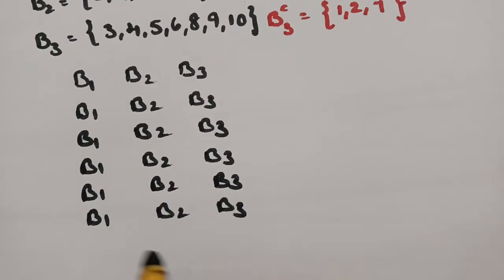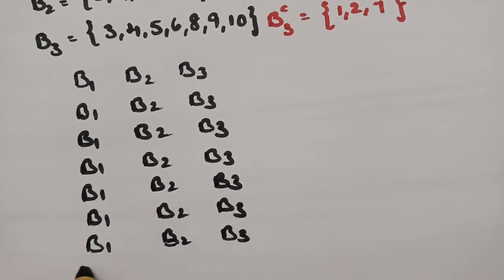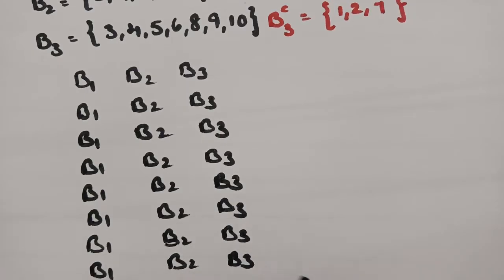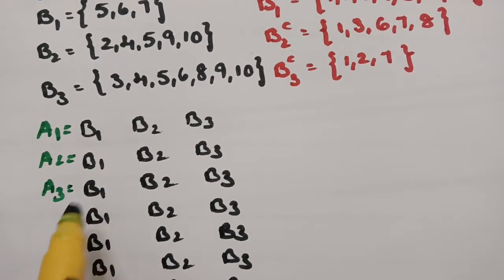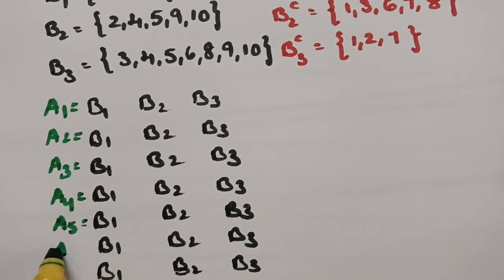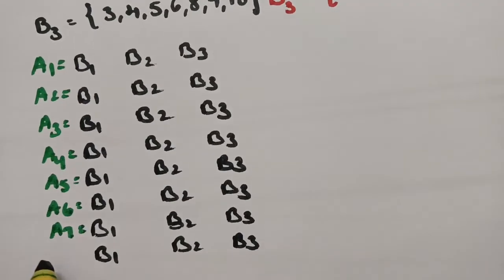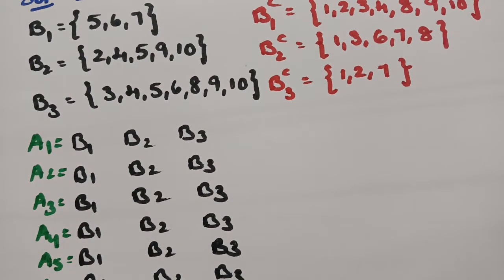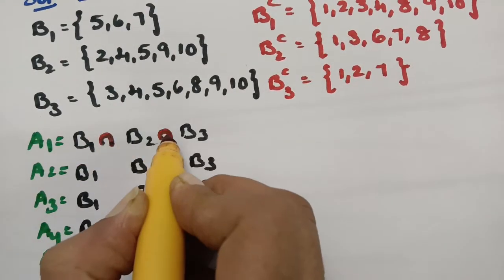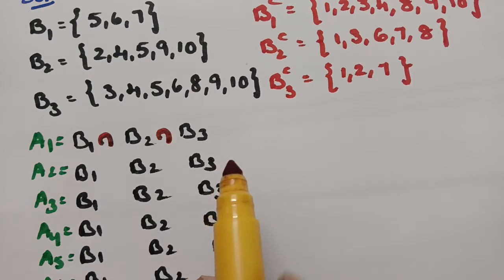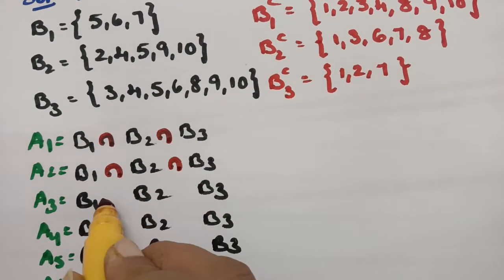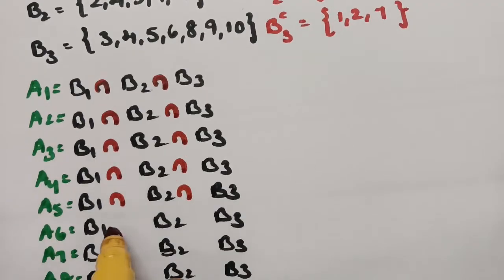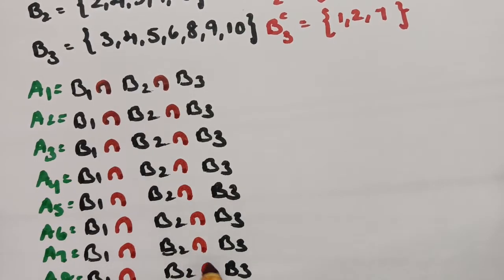We label them A1, A2, A3, A4, A5, A6, A7, and A8. MinSets means we make an intersection for each and every subset combination. If you make an intersection, you will get the minimum common elements — that is why it is called a minimum set. If you keep a union, it would be maximum sets. So here we are keeping intersection — B1, B2, and B3, each written for 8 times.